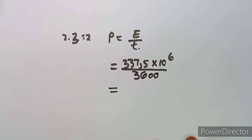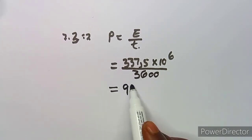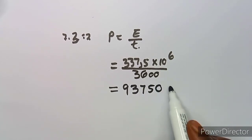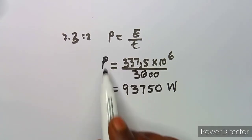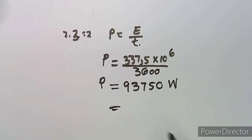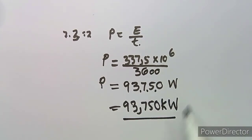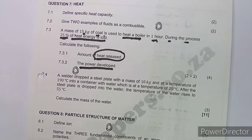Dividing 337.5 × 10⁶ by 3600 seconds, you obtain 93,750 watts. This is measured in watts because we are calculating power. You can also convert to kilowatts: that gives 93.750 kilowatts. Either way, you will obtain the full marks. That is the power developed — it's simply a matter of applying the formulas.